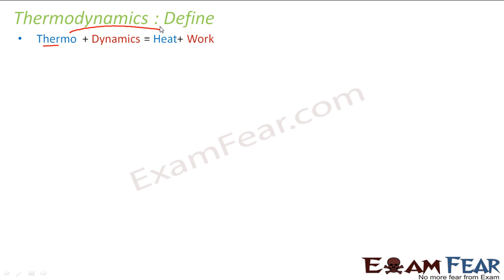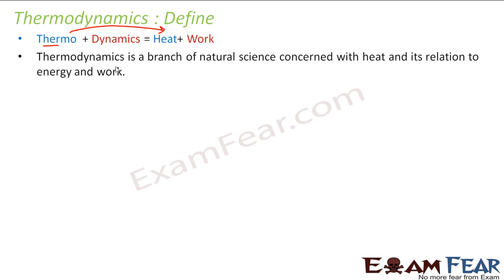Let's define thermodynamics once again. As the name states, thermodynamics = thermo + dynamics. Thermo means heat, and dynamics involves motion or work — usually we talk about converting heat to work. So the definition is: it is a branch of science which is concerned with heat and its relation to energy and work. Where heat is linked with energy and work, the science dealing with that is called thermodynamics.